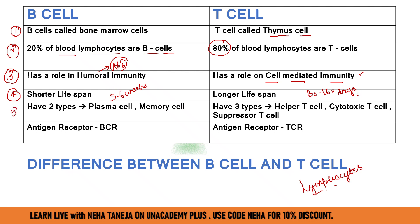Now, looking at types within B-cells: after activation, B-cells differentiate into plasma cells and memory cells. The major work of plasma cells is antibody production. Memory cells remember which antigen came — the antigen information remains in memory for future immune responses.